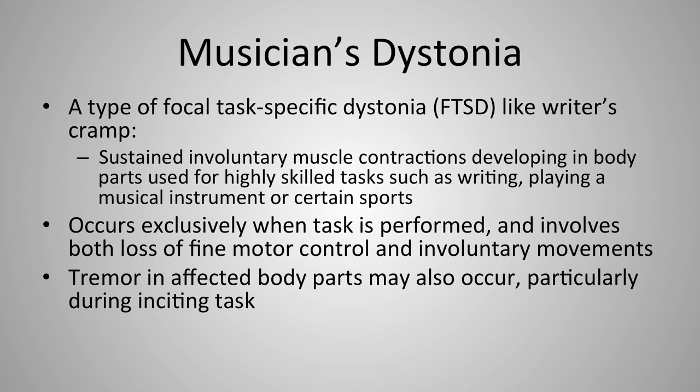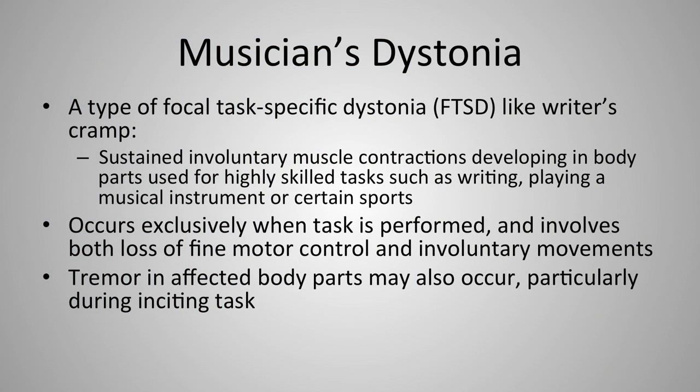Musicians' dystonia is a type of focal task-specific dystonia (FTSD), like writer's cramp. It involves sustained involuntary muscle contractions that develop in body parts used for highly skilled tasks — playing a musical instrument, certain sports, or writing — and tends to occur exclusively when that task is being performed. It involves both loss of fine motor control and involuntary movement, and a tremor in the affected body parts can also occur when performing the triggering task.